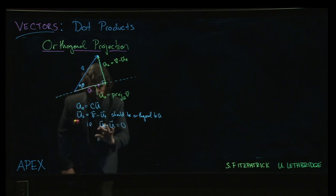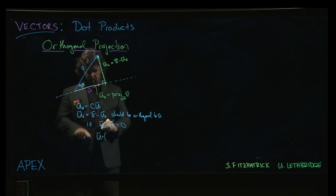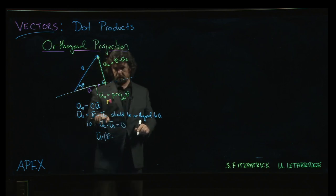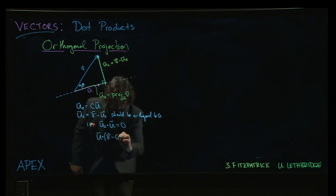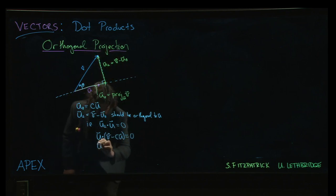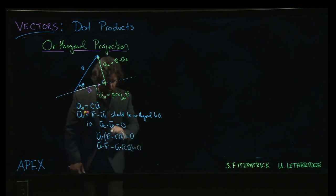We know the order doesn't matter for the dot product. So u dotted with v minus... Now, this parallel part, we said we want that to be a scalar multiple of u, cu. We want that to be zero. Well, we know that we can distribute the dot product. So u dotted with v minus u dotted with c times u. That should be zero.